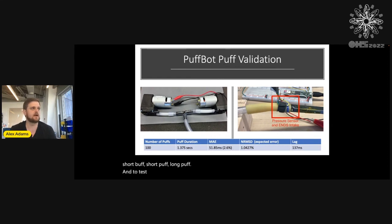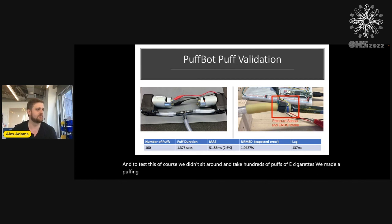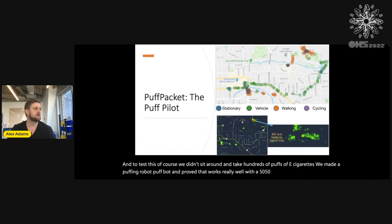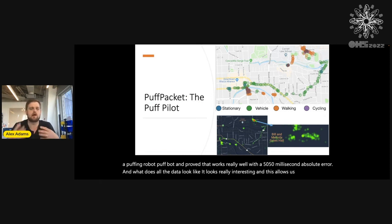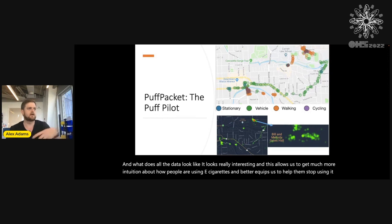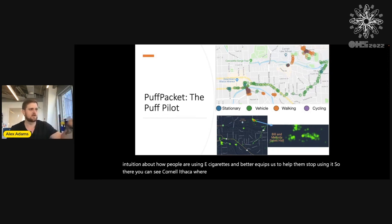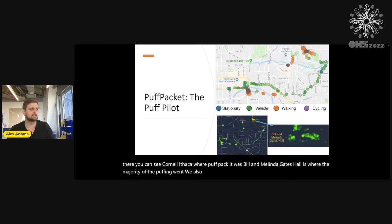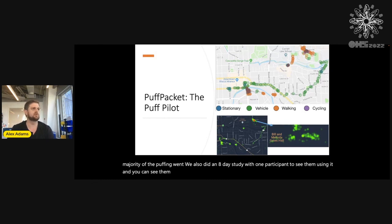To test this, we didn't sit around and take hundreds of puffs of e-cigarettes — we made a puffing robot, PuffBot. It proved the system works really well with a 50 millisecond absolute error. The data looks really interesting and allows us to get much more intuition about how people are using e-cigarettes, better equipping us to help them stop. You can see Cornell Ithaca where PuffPacket was built, and Bill and Melinda Gates Hall is where the majority of the puffing went. We also did an eight-day study with one participant, and you can see they mostly used it when driving, walking, or stationary — not while cycling.